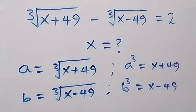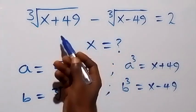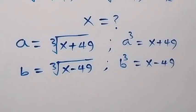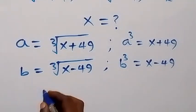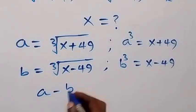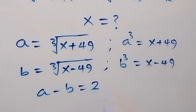From what we have here, this can simply be written as A minus B equals to 2. So we have A minus B equals to 2.